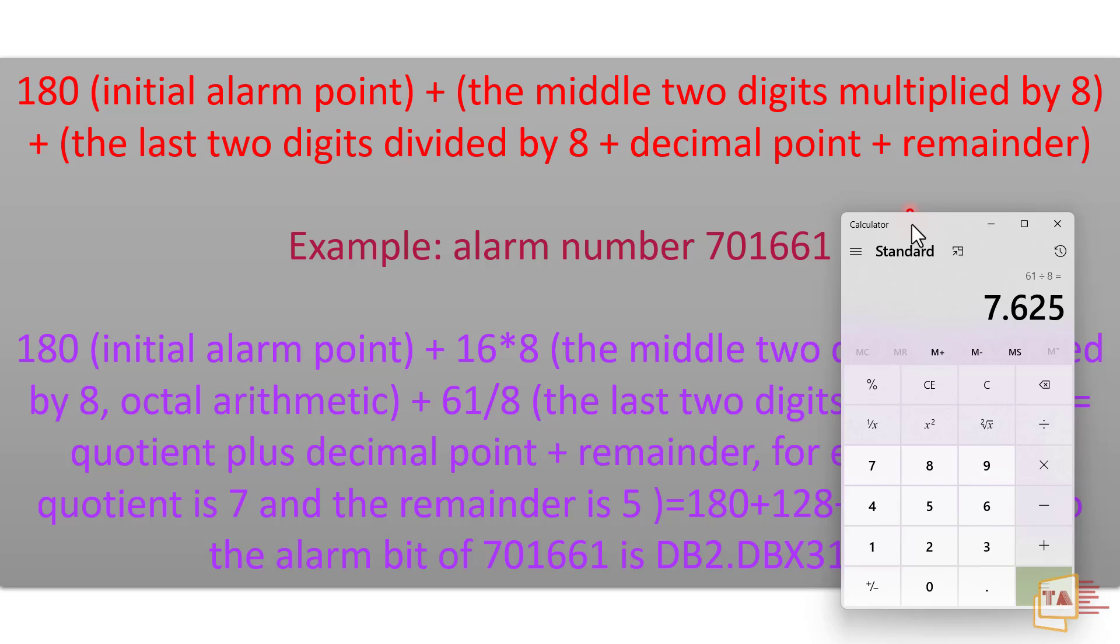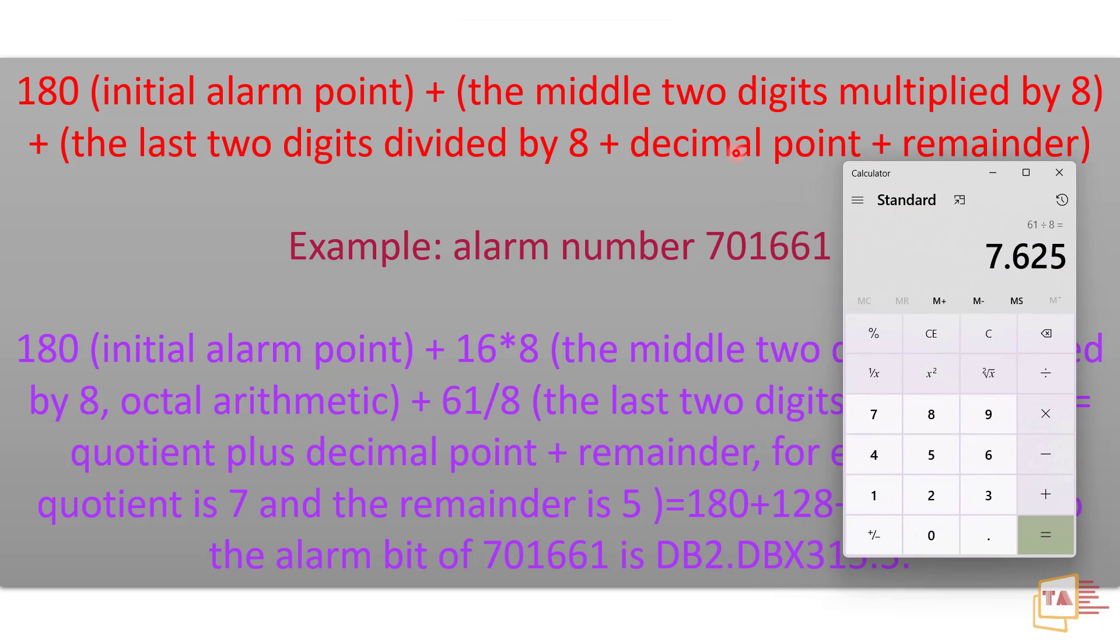So you should add the decimal point. Now I'm adding 180 plus 128 plus 7. After that we have to add decimal point and the remainder. So what we do will come 315.5. So this is the exact DB address of our PLC user alarm.